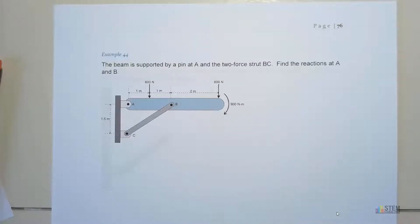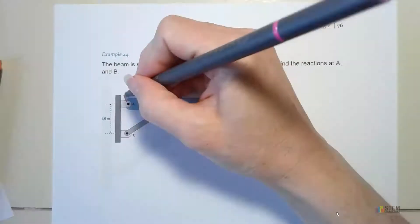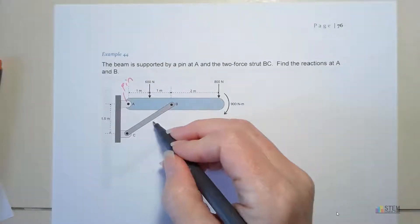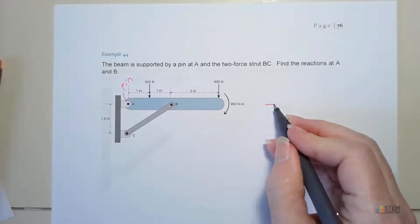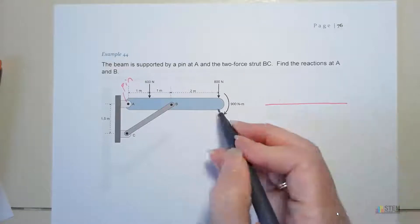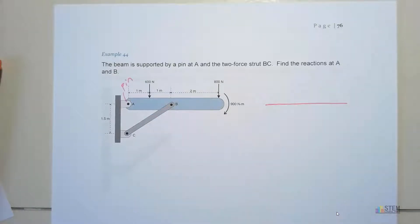Hey, hey everyone! We've got a beam that is supported by a pin A and a two-force strut BC. We want to find our reactions at A and B. So this is a pin, and then this is that two-force member. We'll talk about that in a second, what that means.